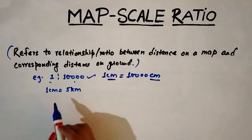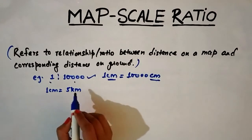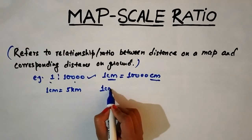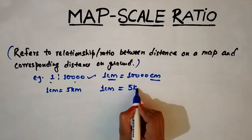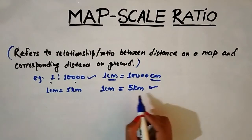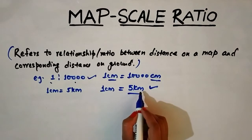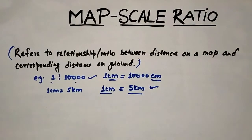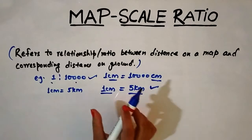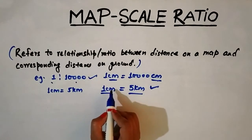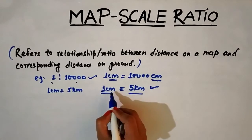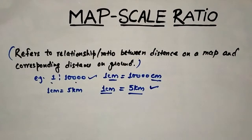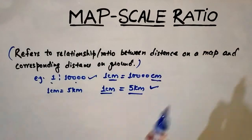The scale can also be in the form of one centimeter equals to five kilometers. This means one centimeter on the map is equal to five kilometers in reality. Since we cannot represent a longer distance on a map, we use some smaller unit — that's why we use centimeter to represent any length on the map. That's the introduction part of map scale ratio.